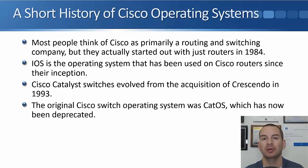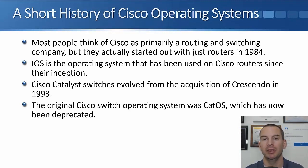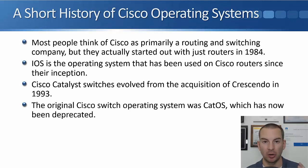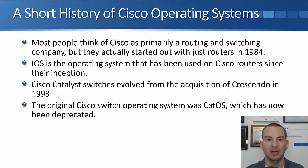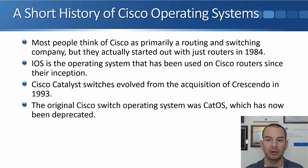Many people think of Cisco as being a routing and switching company, but they actually started as a purely routing company. IOS was the original operating system they used on routers — the same operating system that's used today, although it's gone through quite a few upgrades since Cisco started back in 1984.